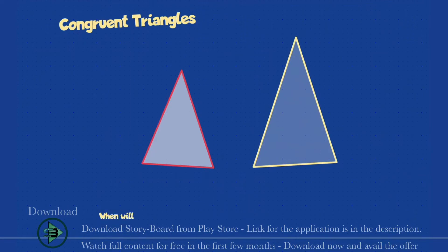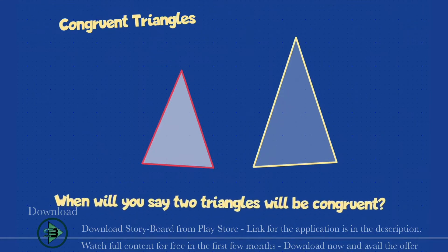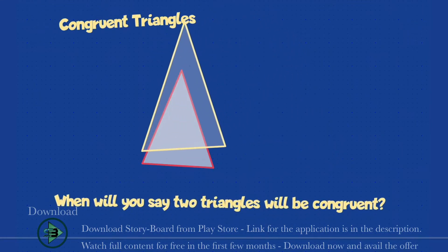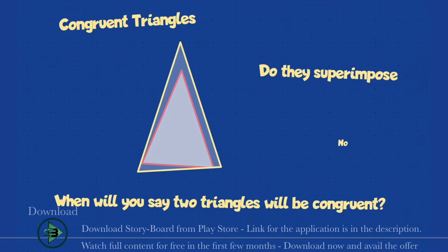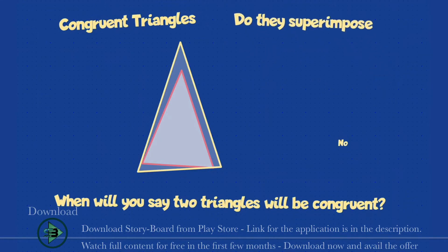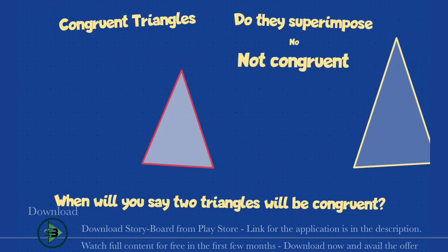Let me draw two triangles for you. When do you say that this red triangle is congruent to this yellow triangle? The easiest way — just pick up one triangle and keep it on the other triangle. If they superimpose, they are congruent. Does the red triangle fit over the yellow? No. Which means they are not congruent. In congruence you have the SSS test, which means all three sides are equal — which is not happening in this case.